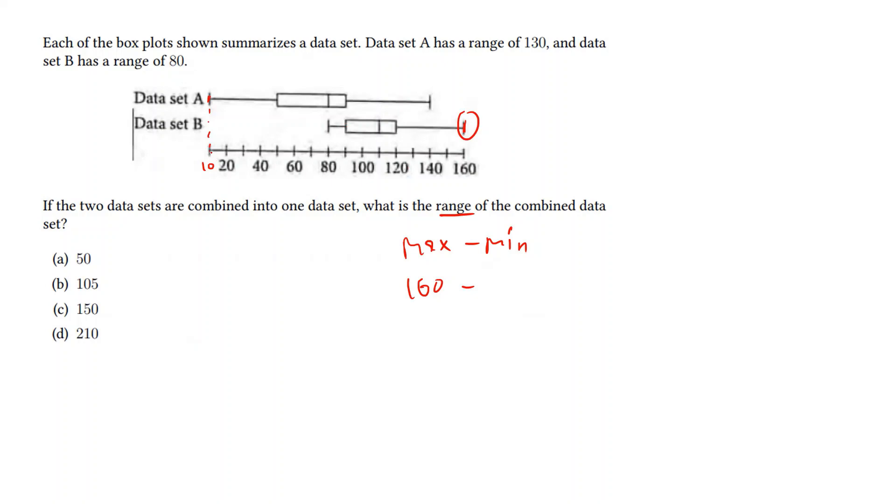Do not be fooled into thinking this is a zero. The scale of the horizontal axis is by skip counting 20s, which means that one individual mark demarcates 10. Thus, 20 to the next mark will be 10 instead of 0. Thus, we have 150 for the range.